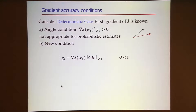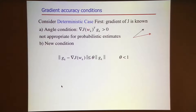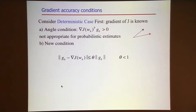I could try to work with conditions like an angle condition, but I wouldn't get very far, because an angle condition like this I don't know how to express in terms of statistical estimation conditions. So instead of that, I'm going to propose a different measure on how to compare the true gradient and the stochastic gradient. I have not seen this in the literature.